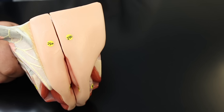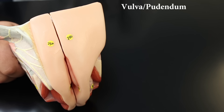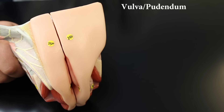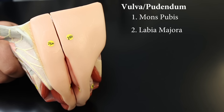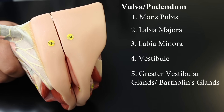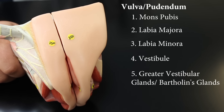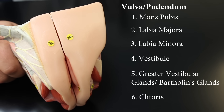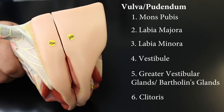To finish, the vulva or pudendum refers to all the external genitalia together. Its components include: the mons pubis, the labia majora, the labia minora, the vestibule (the space inside the labia minora), the greater vestibular glands or Bartholin's glands (which secrete mucus into the vestibule), and the clitoris — erectile tissue surrounded by skin folds called the prepuce.